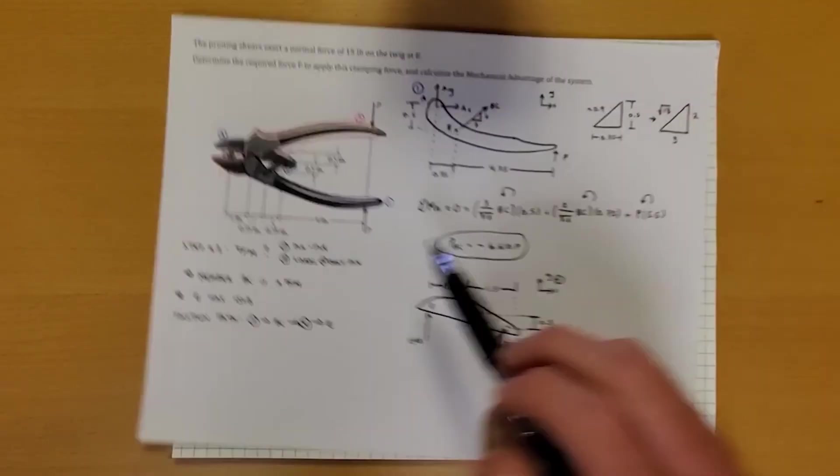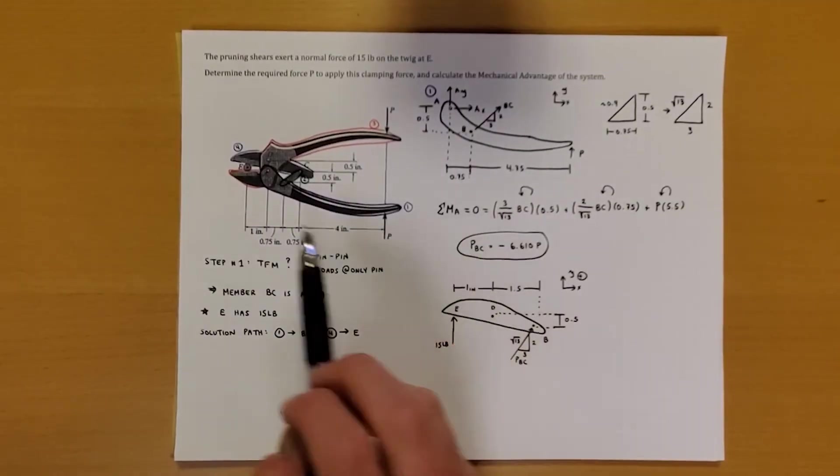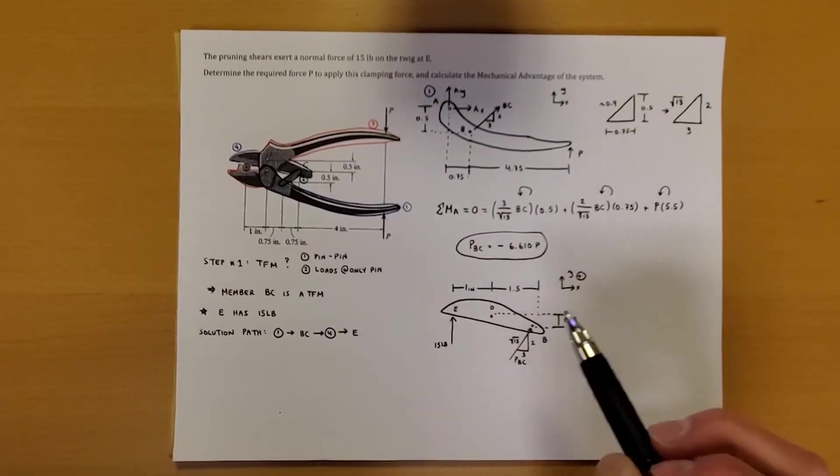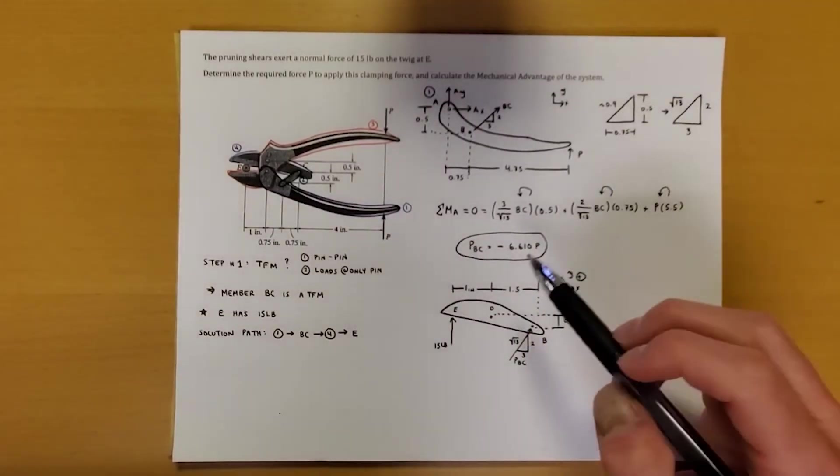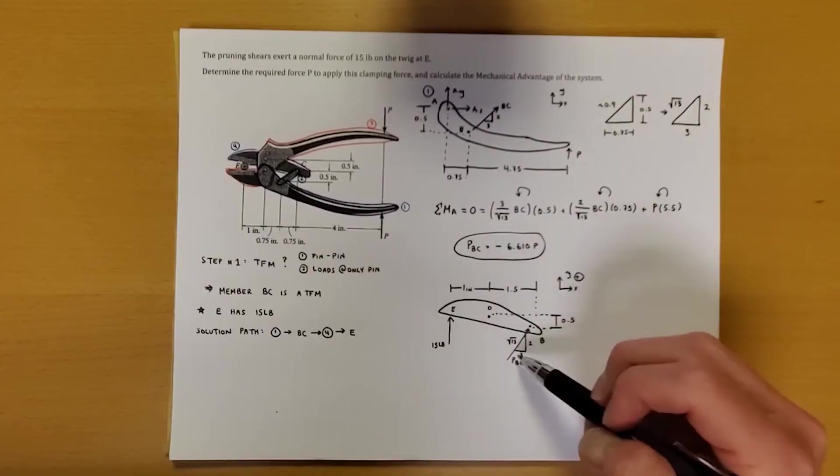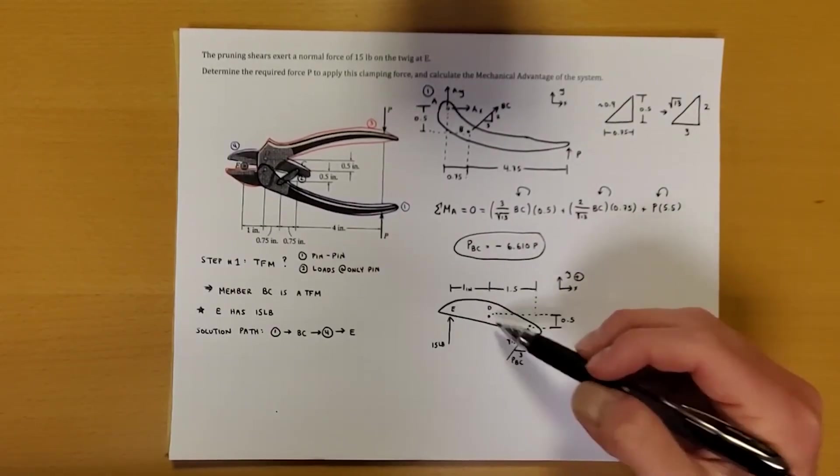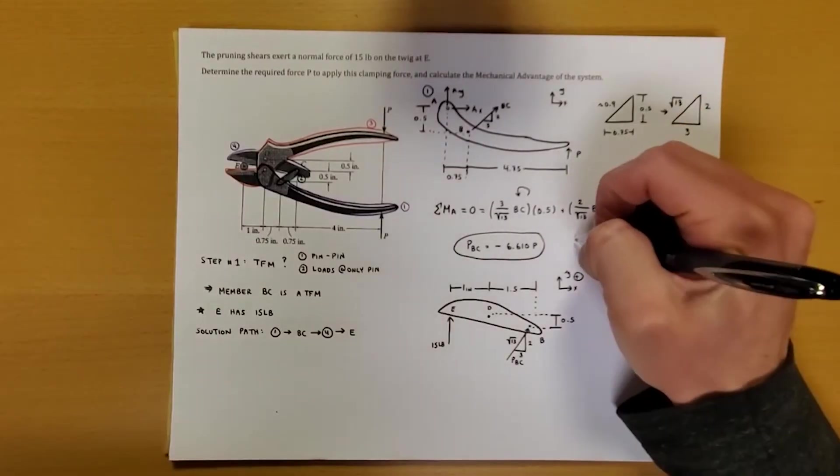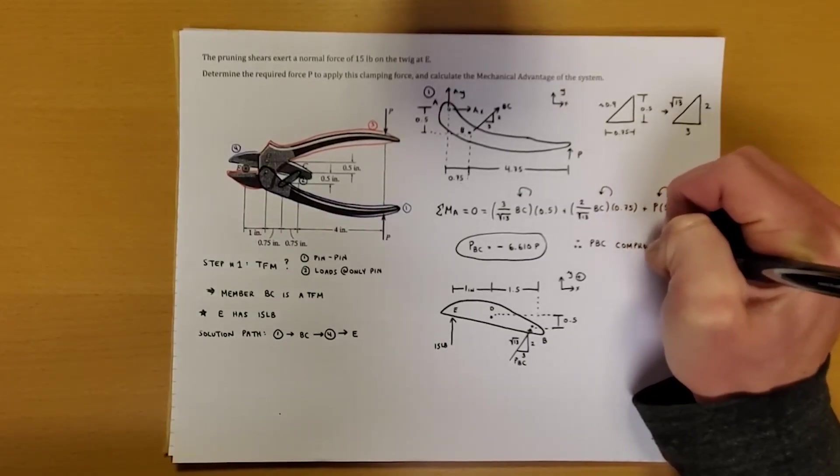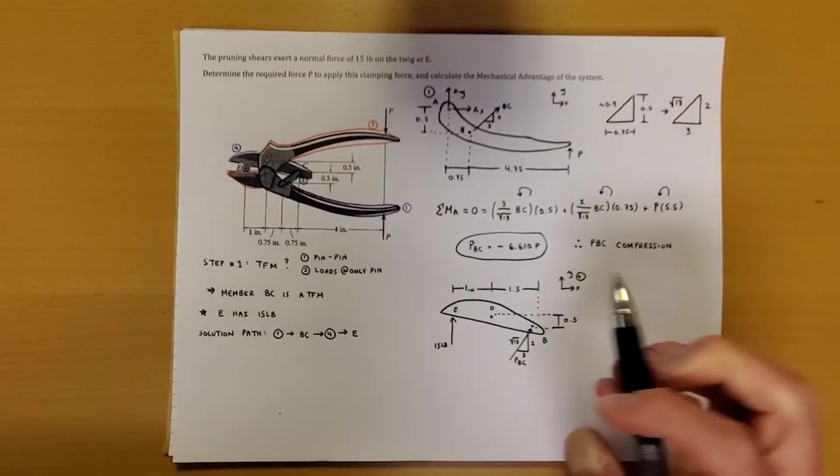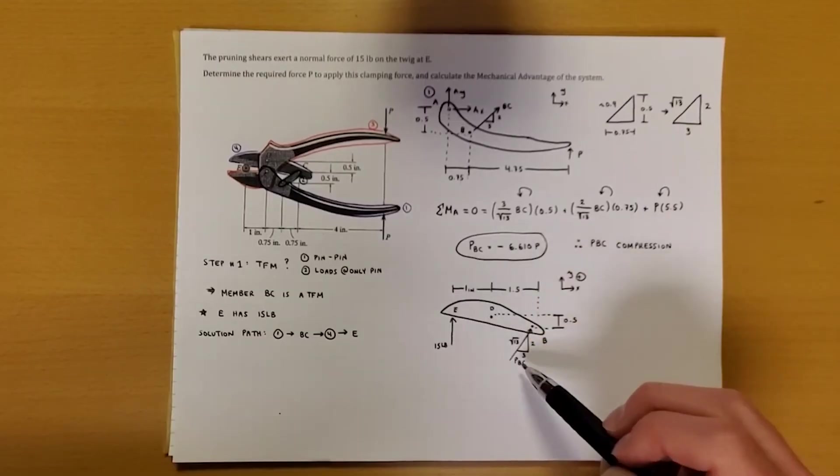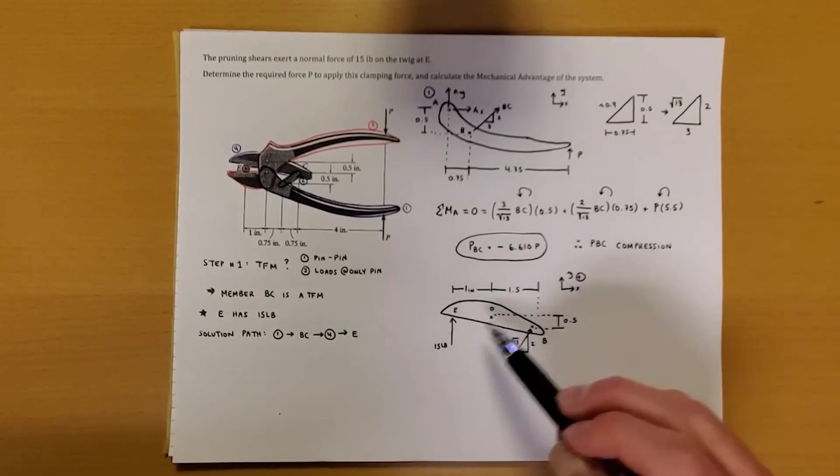So pretty much our question was, what is the force P that we need to apply to get to the normal force E? So now we have PBC in terms of P, and we'll solve. Now something you can see that I've kind of done here is that here we had PBC was equal to negative 6.610P. I've gone ahead and just said, okay, because I hadn't drawn this free body diagram yet, I know that PBC is compression, which means that it's got to be pushing outward onto the nodes that it's touching. So PBC is fighting point B and it's pushing this way. So essentially, I'm just going to assume that PBC is positive 6.6 in this free body diagram right here.